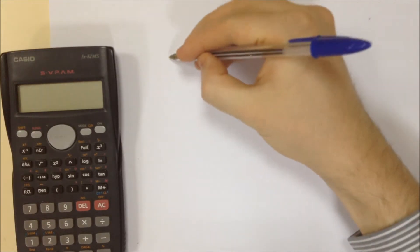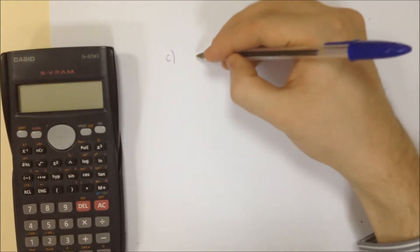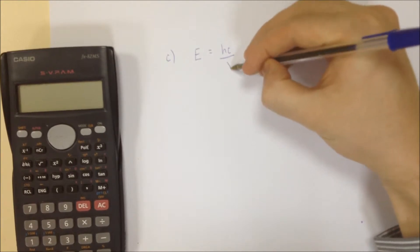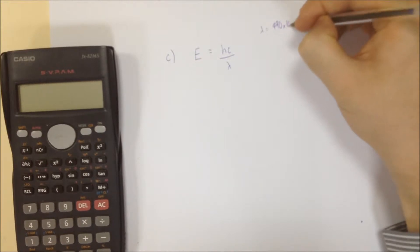Question C then. Question C asks us to calculate the energy of each photon in electron volts. So we first of all need to work out the energy of a photon in joules. That comes from Hc over lambda. Lambda we had given in the question as 490 times 10 to the minus 9.